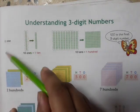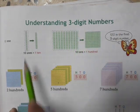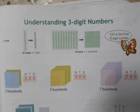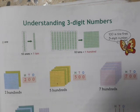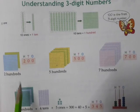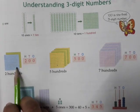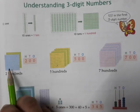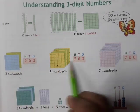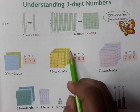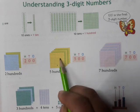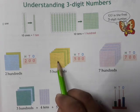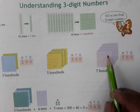Namashivai students, today we will learn about understanding three-digit numbers. We have already learned this with two-digit numbers. Now we will learn the same thing with three-digit numbers. Here, one blue block is a hundred. There are two blocks — one blue and one green — so two blocks means two hundred. There are five blocks, so it is 500.